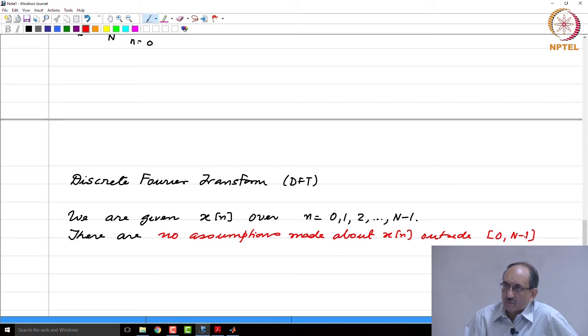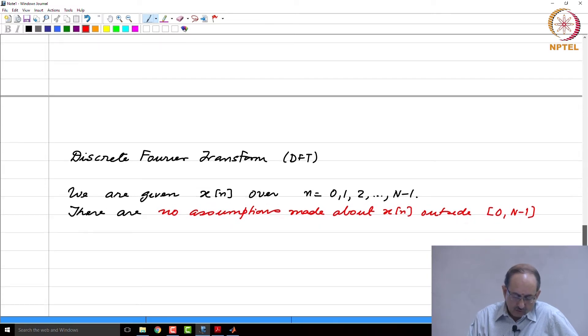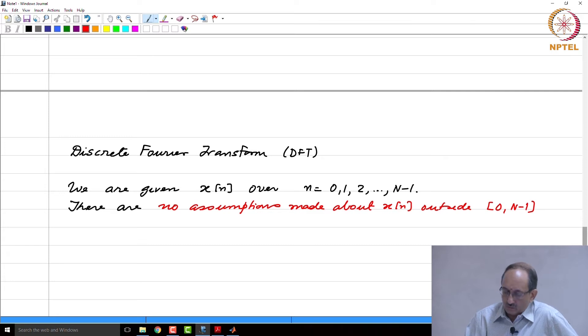Suppose I give you N data points and then I tell you there are no assumptions about x(n) outside these values. If you want to make an assumption about x(n) outside 0 to N minus 1, one natural assumption that will come to your mind would be 0. So it is in that context, what we are saying is no assumption is made about x(n) outside 0 to N minus 1.